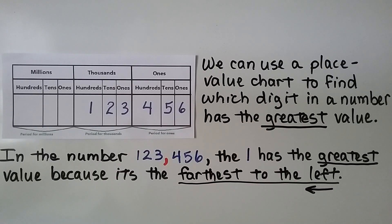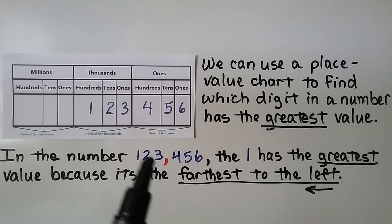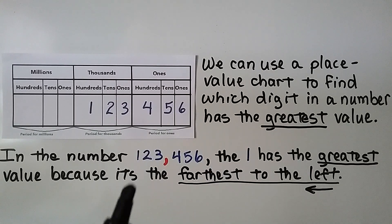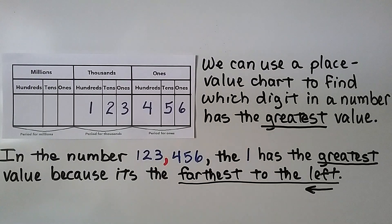We can use a place value chart to find which digit in a number has the greatest value. In this number, the one has the greatest value because it's farthest to the left.